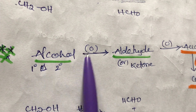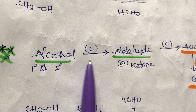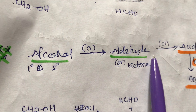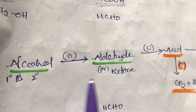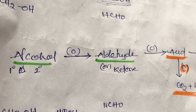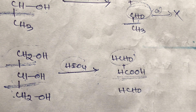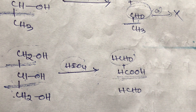In summary, with periodic acid HIO4, primary and secondary alcohols undergo oxidative cleavage. Primary alcohols give aldehydes, which further oxidize to acids. Secondary alcohols give ketones, which further oxidize to acids. Periodic acid is also an important oxidizing reagent in organic chemistry.